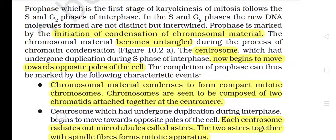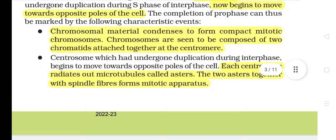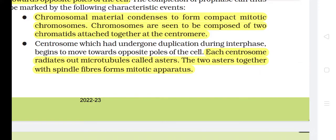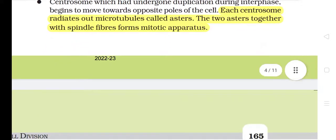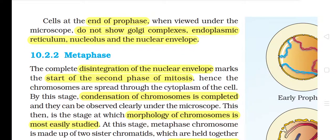The centrosome, which had undergone duplication during S phase of interphase, now begins to move towards opposite poles of the cell. The completion of prophase is marked by the following events: chromosomal material condenses to form compact mitotic chromosomes, which are seen to be composed of two chromatids attached together at the centromere. The centrosome begins to move towards opposite poles, radiating out microtubules called asters. The two asters together with spindle fibers form the mitotic apparatus. Cells at the end of prophase do not show Golgi complexes, endoplasmic reticulum, nucleolus, and the nuclear envelope.